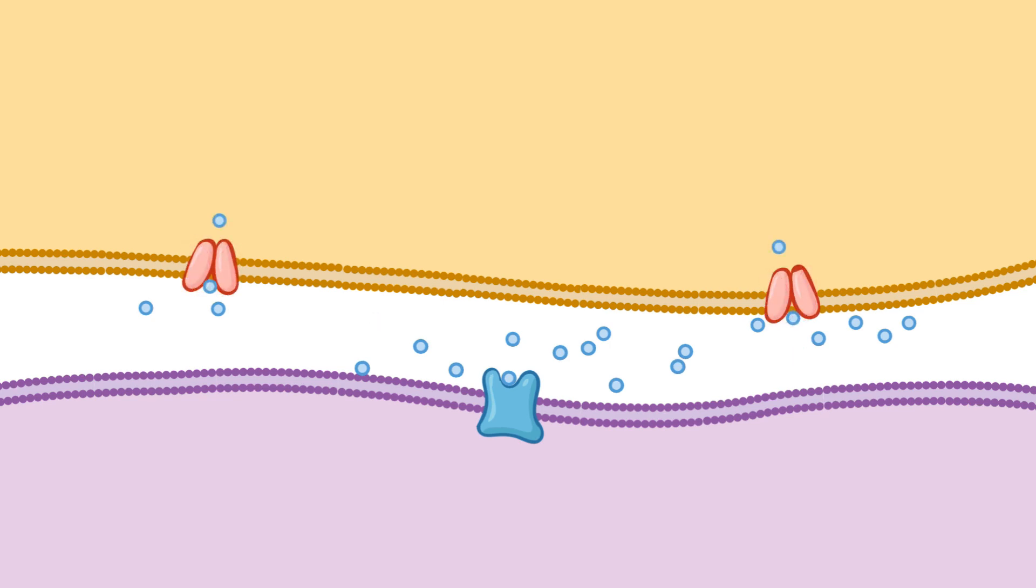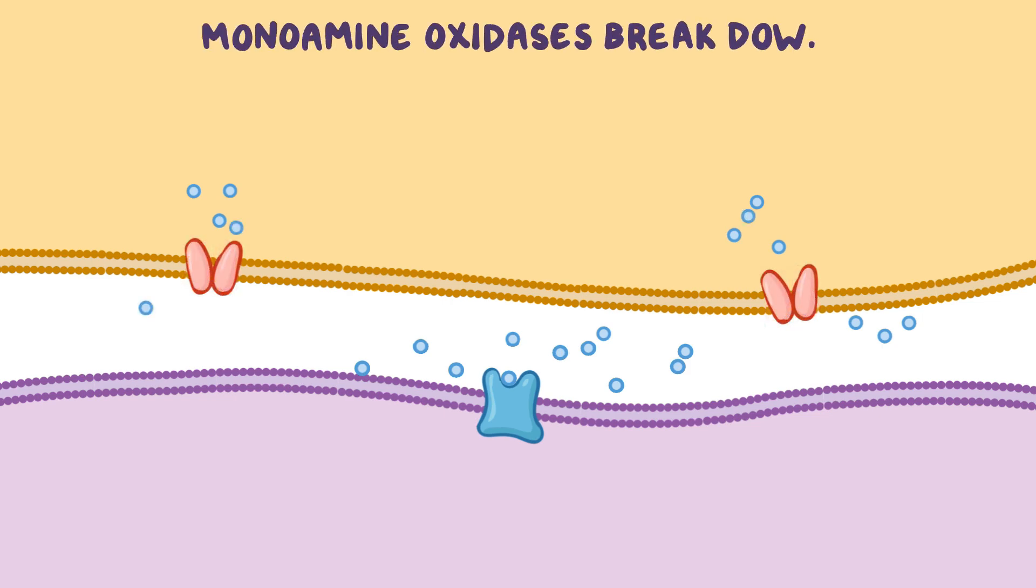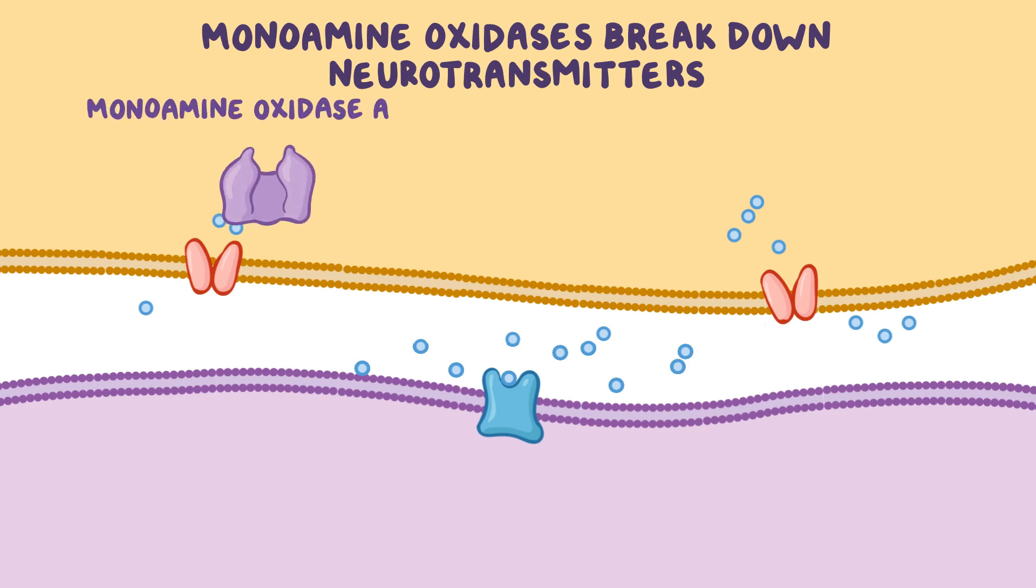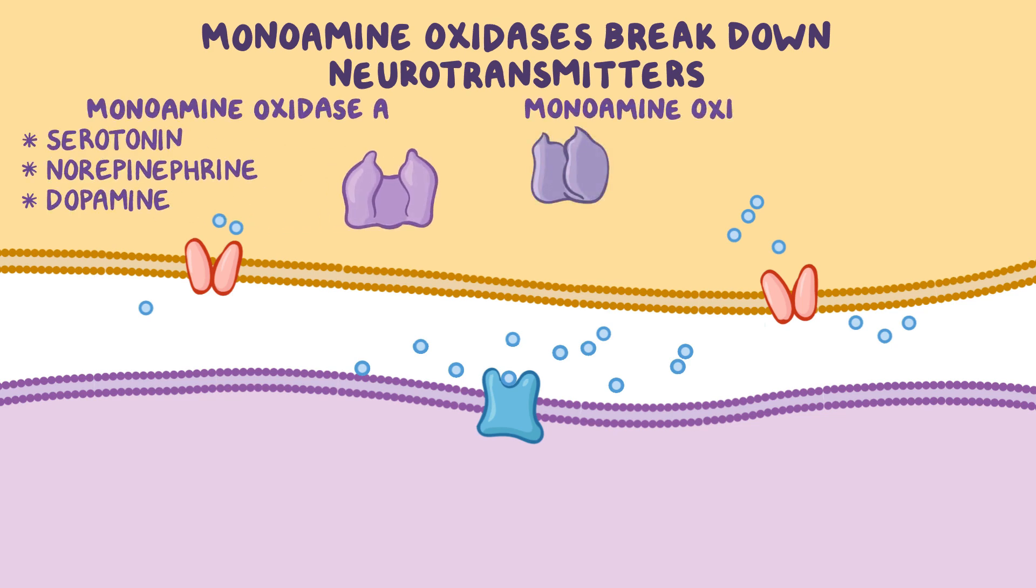Now each of these presynaptic neurons has small reuptake proteins, which pump the neurotransmitters from the synaptic cleft back into the presynaptic neurons. Once inside the neuron, a class of enzymes called monoamine oxidases will break down some of these neurotransmitters. Monoamine oxidase A breaks down serotonin, norepinephrine, and dopamine, and monoamine oxidase B only breaks down dopamine.